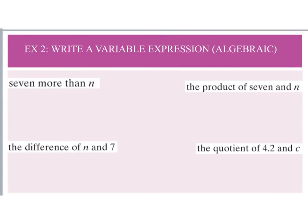For multiplication we have words like 'product' and 'times,' and the words 'quotient' and 'divided by' indicate division. Example two asks us to write a variable expression for given phrases. 'Seven more than n' means we're adding seven to n, so we get seven plus n. 'The product of seven and n' gives us 7n, which means seven times n.